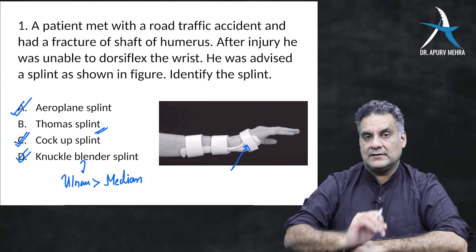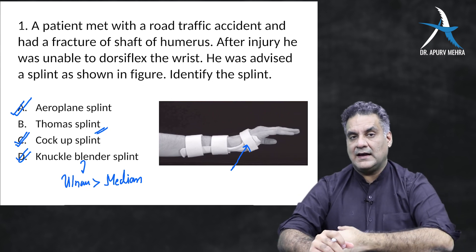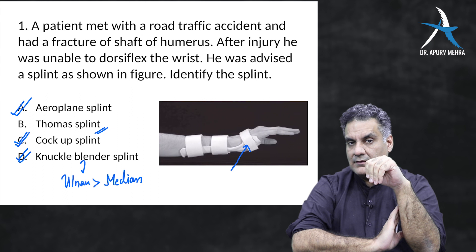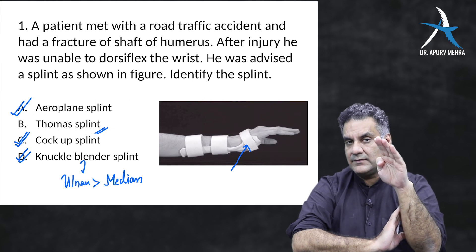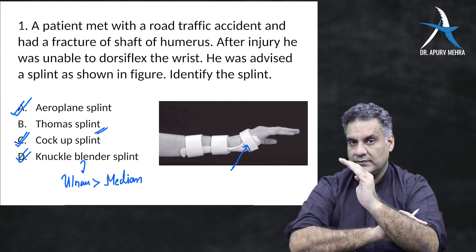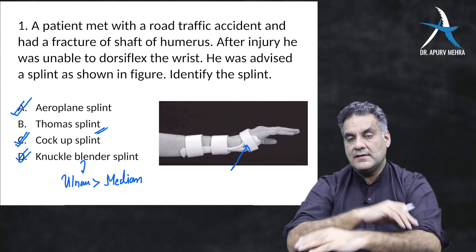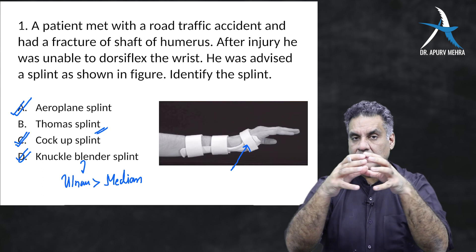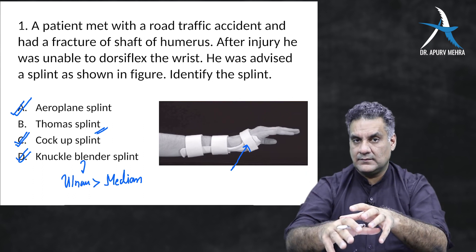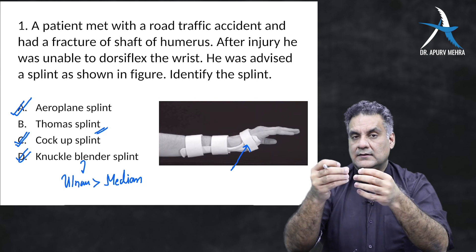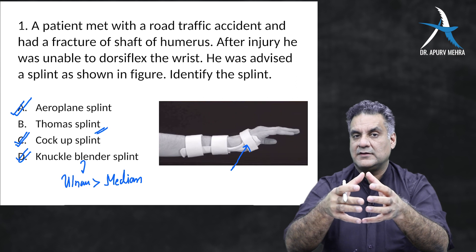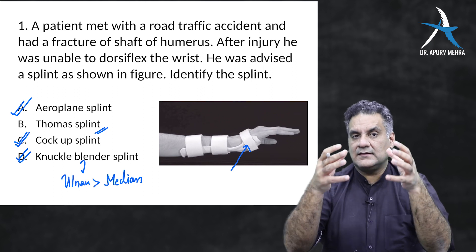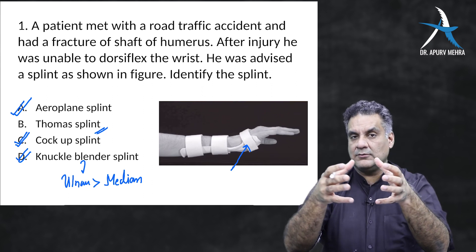The next nerve that can be damaged is the posterior interosseous nerve, around the head of radius, causing finger drop. The posterior interosseous nerve supplies the finger extensors, while the wrist extensors are supplied by the radial nerve proper. Around the hip, on the posterior border of the acetabulum, travels the sciatic nerve — hip dislocations damage it. Around the knee, at the neck of the fibula, is the common peroneal nerve — knee damage causes foot drop.